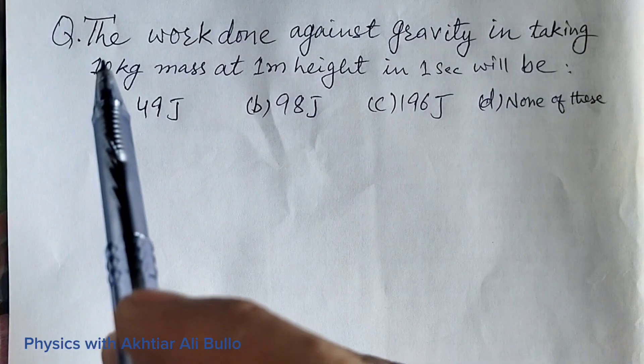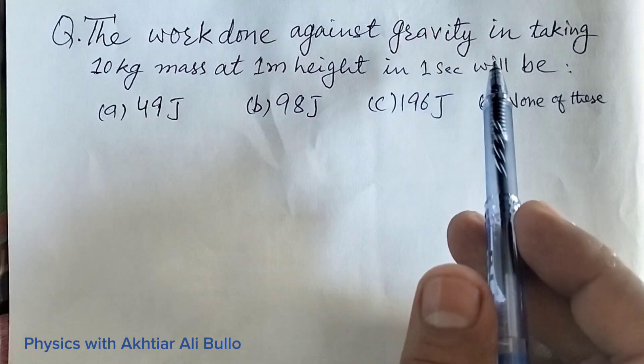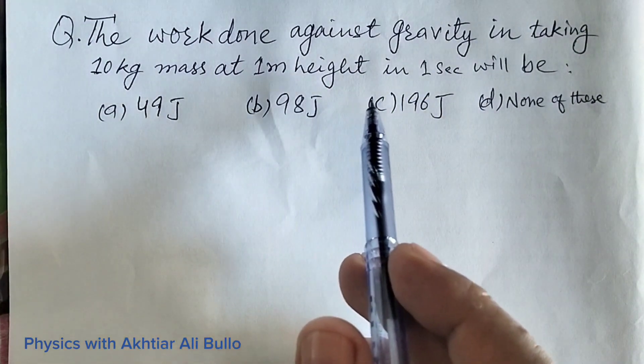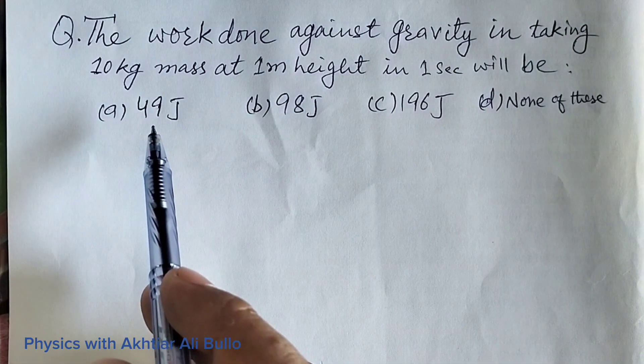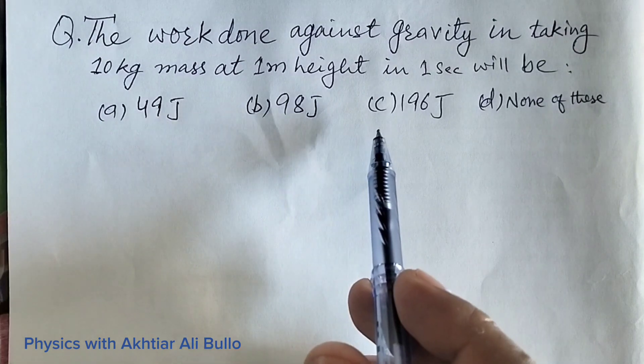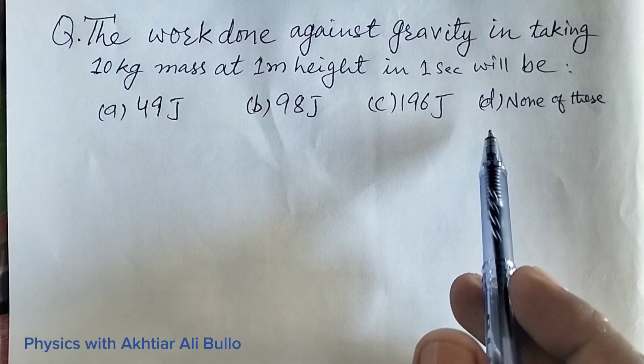The question is, the work done against gravity in taking 10 kg mass at 1 meter height in one second will be: A) 49 Joule, B) 98 Joule, C) 196 Joule, D) none of these.